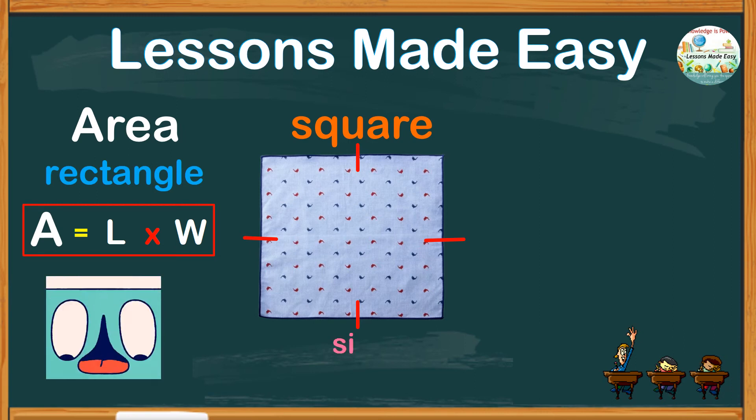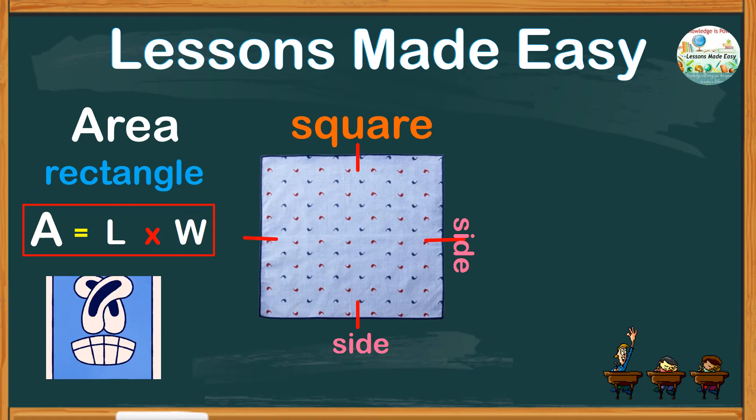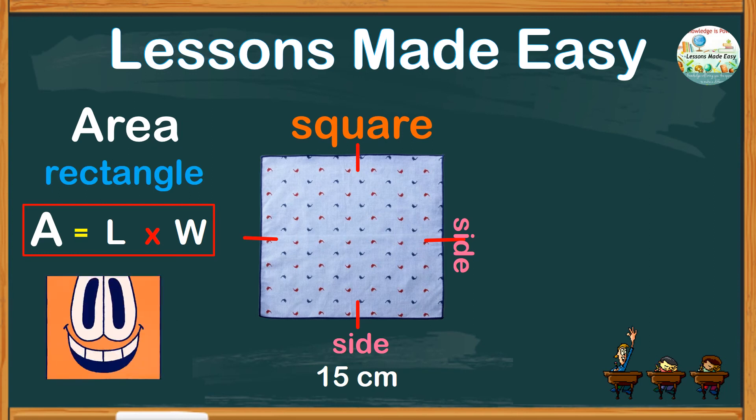we use side times side. Let's say, for example, this given square measures 15 centimeters each side. How do you find the area? This would be area equals side times side.